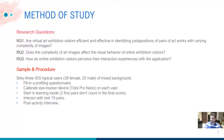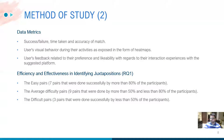The participants were asked to fill in a profile questionnaire. Then they were asked to log in and interact with the application. Two pairs of images were used for training and did not count in the final score. Then they had to interact with 19 more pairs. After completion of the task, a post-activity interview allowed them to express their review of the experience. We gathered and analyzed the following data metrics: success, failure, time taken and accuracy of match; user visual behavior during the activities as exposed in the form of heatmaps; and subjective user feedback related to their preferences and likability regarding the interaction experience with the platform.